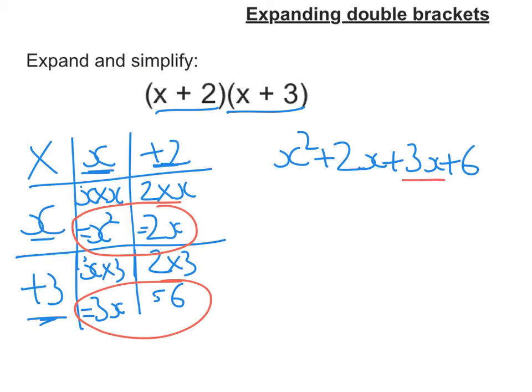And now I just look to simplify. So I'm just going to add those two like terms together. So I get x squared plus 5x plus 6. That's my answer.